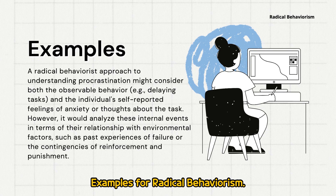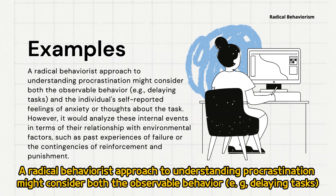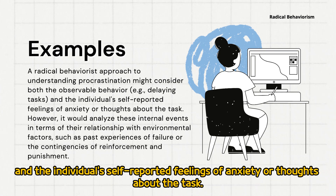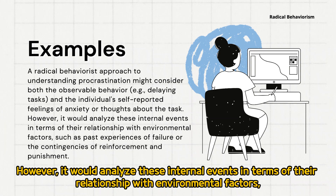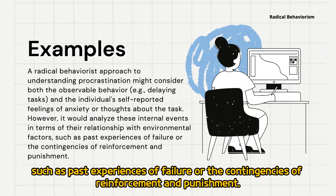A radical behaviorist approach to understanding procrastination might consider both the observable behavior — for example, delaying tasks — and the individual's self-reported feelings of anxiety or thoughts about the task. However, it would analyze these internal events in terms of their relationship with environmental factors, such as past experiences of failure or the contingencies of reinforcement and punishment.